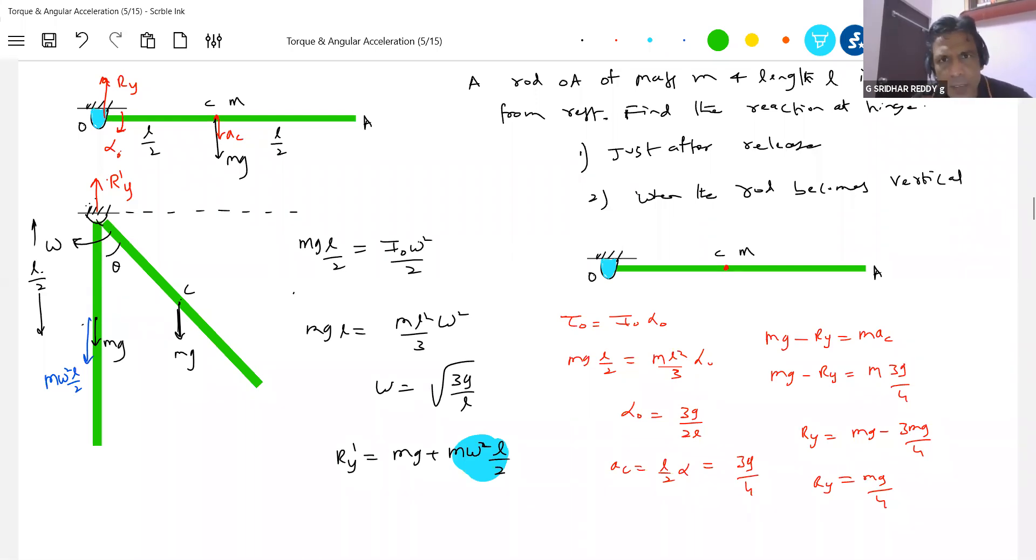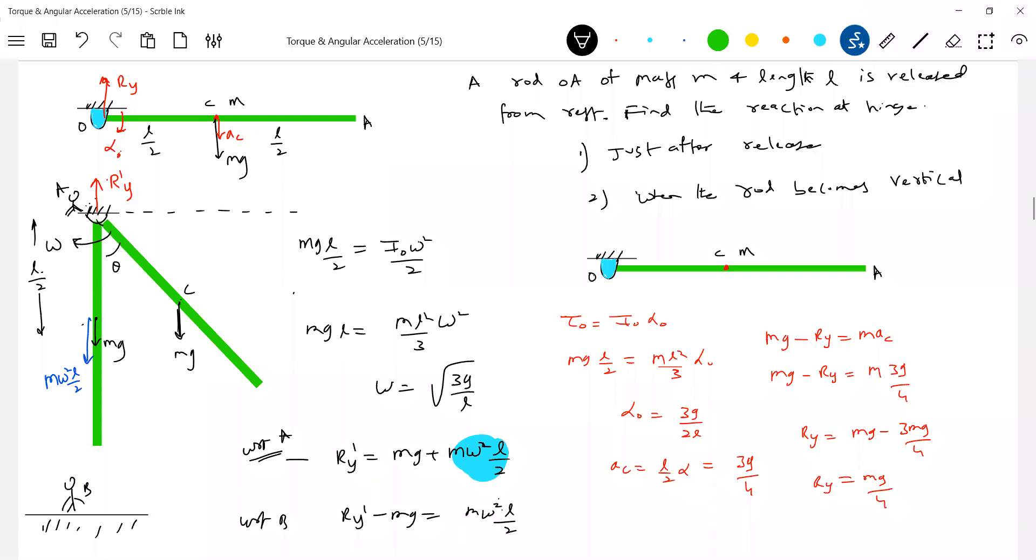If you are on the ground, if you are standing on the ground, then you should not write this equation. Where you are, if you are on the at the axis. The person, this person will write it here, with respect to A. Then what about person? Person B is here. With respect to B, you should write like this. R Y dash minus M G equal to. This is very important. You should bring all the ideas what you learned. I'm making things clear. You should bring all the ideas what you had.